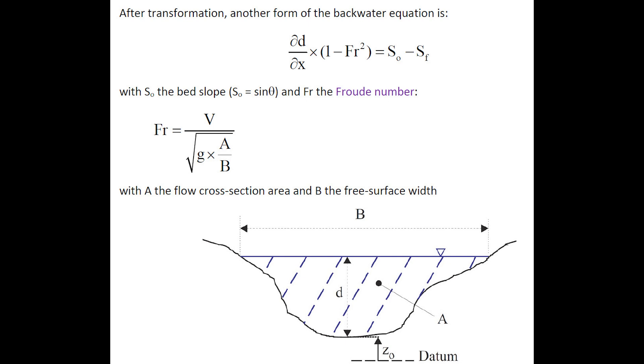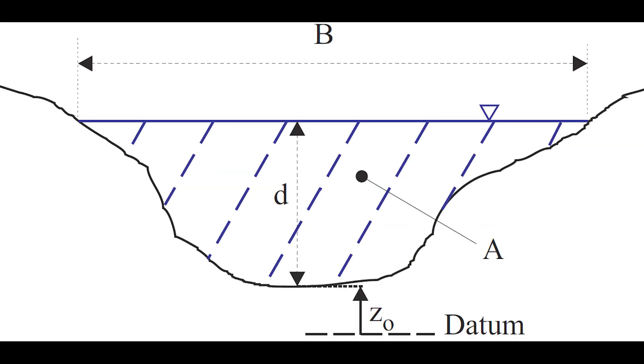After transformation, another form of the backwater equation is shown here, in which the Froude number appears. The Froude number is defined as the ratio of the velocity to the square root of g times the ratio of the cross-sectional area to the free surface width.